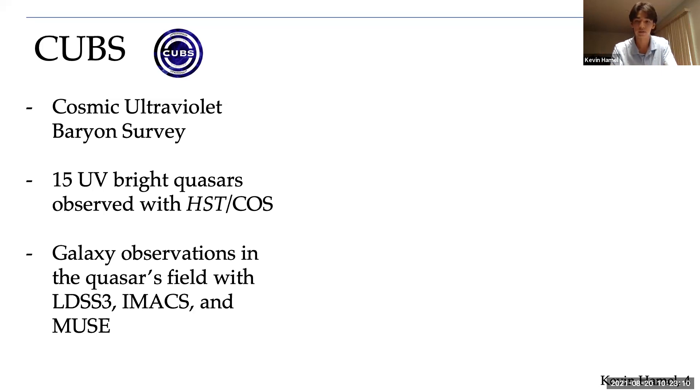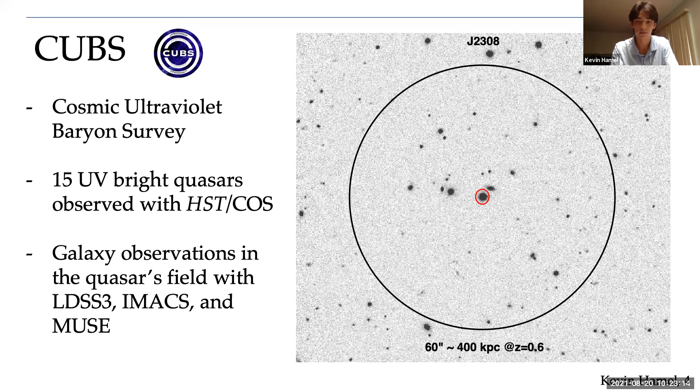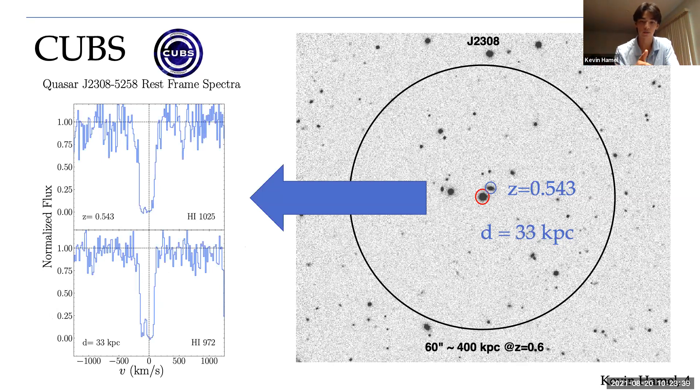But take, for example, one of the 15 fields that we have with quasar J2308 circled in red here. Consider this particular galaxy sitting at a redshift of about 0.5, and a projected distance of roughly 30 kiloparsecs from the quasar line of sight. When I move the observed quasar spectrum to that galaxy's rest frame, I can look for detections of gas which is surrounding this particular galaxy. Here I'm showing the normalized flux for both Lyman-beta and Lyman-gamma transitions. If there's a significant absorption in both transitions, it's a good indicator that the detection is real. So here, what this tells me is that there is indeed a strong detection of neutral hydrogen at about 30 kiloparsecs from this galaxy.